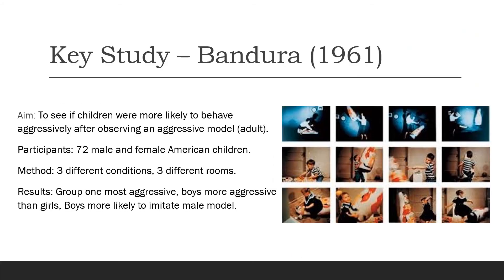The key study for social learning theory is by Bandura in 1961. The aim was to see if children were more likely to behave aggressively after observing an aggressive model. There were 72 male and female American nursery-aged children, split equally across three groups: the aggressive model condition, the non-aggressive model condition, and a control group. In the first room, the aggressive group saw an adult be aggressive towards a bobo doll — hitting, shouting at, or kicking it.